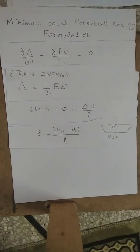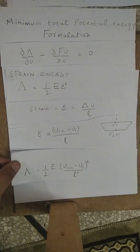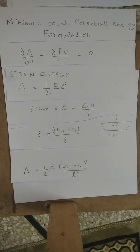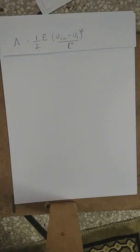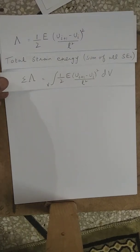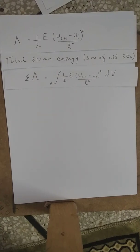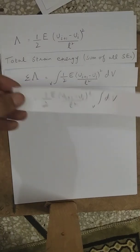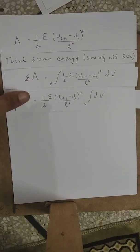We will substitute this value of strain into the strain energy formula. After substituting, we then calculate the total strain energy as the sum of all element strain energies by integrating over the entire volume. Integrating over the volume brings all other terms out of the integration except the volume itself.